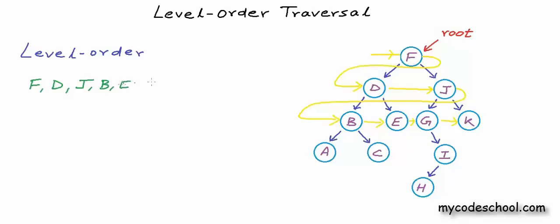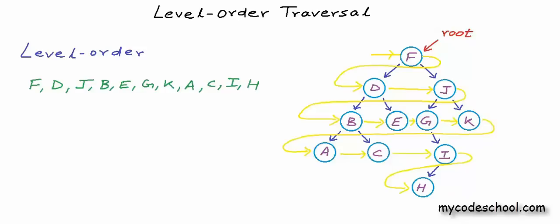So we will go like B, E, G, and then K. And now we can go to the next level: A, C, I, and finally H. This is the order in which we should visit the nodes, but the question is how can we visit the nodes in this order in a program.